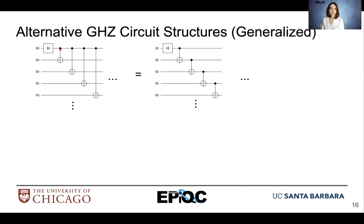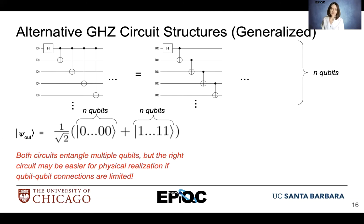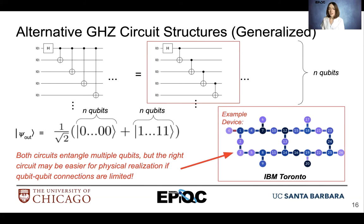You can create the GHZ circuit with the top qubit acting as the control, or you can use a more laddered structure where the previous target becomes the control. These will both accomplish the same thing for an N-qubit state. The right circuit might be easier to construct on a physical device, especially if your qubit-qubit connections are limited. For example, on the IBM Toronto device, you can only communicate with qubits that are immediately adjacent, so it will be easier to implement the laddered version of the GHZ circuit.